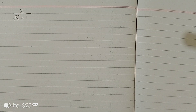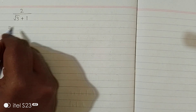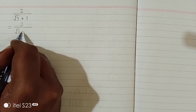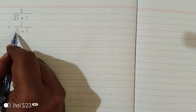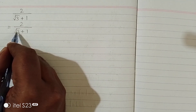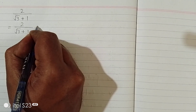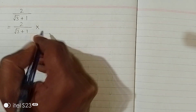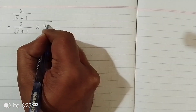In this video we will simplify this fraction by rationalizing the denominator. We have 2 upon square root of 3 plus 1 in the denominator, so we have to remove the square root sign from the denominator. In order to do this, we will multiply by the conjugate of square root of 3 plus 1, and the conjugate of square root of 3 plus 1 is square root of 3 minus 1.